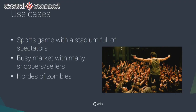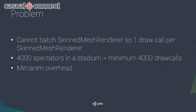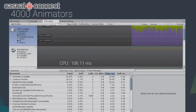With 4,000 characters on screen, some of you may be aware that skinned mesh renderers cannot be batched. This means you need one draw call per character — so a minimum of 4,000 draw calls. Add animation mechanism overhead and you get unusable frame rates. I did profiling with 4,000 animators on screen and got 106 milliseconds CPU time, which is not acceptable.